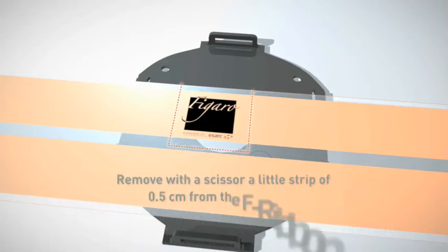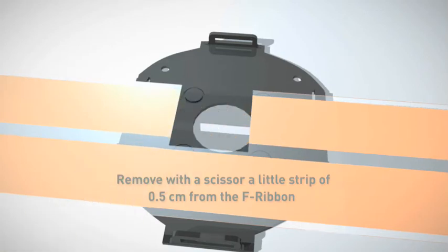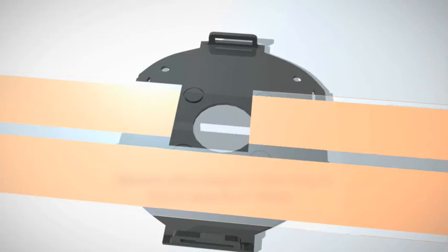Remove with a scissor a little strip of 0.5cm from the F-ribbon, the one with the FIGURO logo, exactly in the middle of the two upper rubber dots of the F-FIL base.